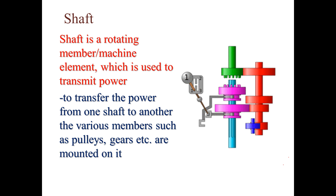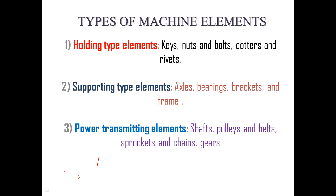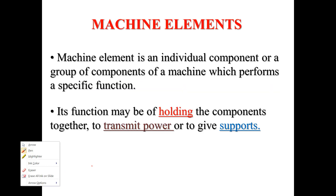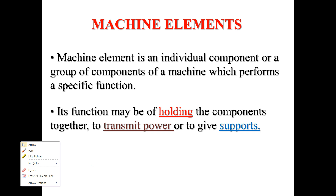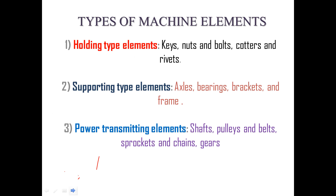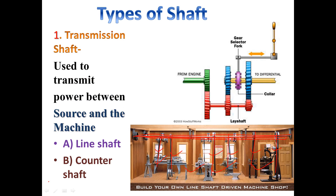The second type is the counter shaft. A counter shaft is parallel to another shaft and transfers power from a line shaft. It acts as a secondary shaft. As shown, power is transmitted from an engine through a green-colored shaft, representing the counter shaft arrangement.